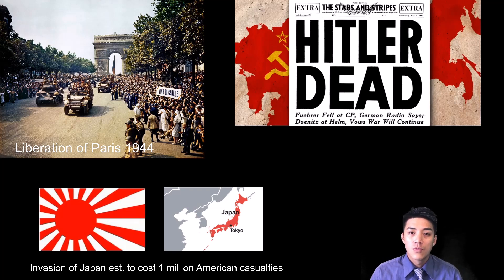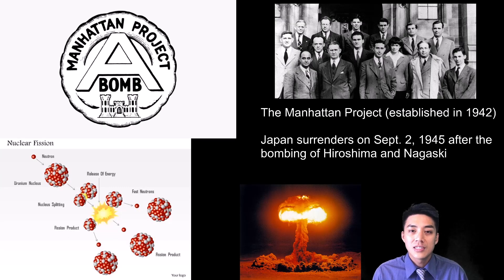With Paris liberated, the war in Europe seemed to be over. The Allies now turned their attention to the Pacific. It was estimated it would cost over 1 million American casualties to invade Japan. The best scientists were brought together during the top-secret Manhattan Project to study fission and develop the first atomic bomb.